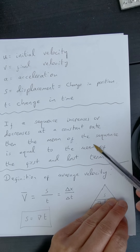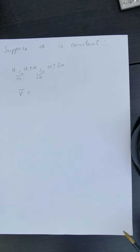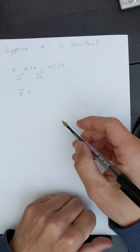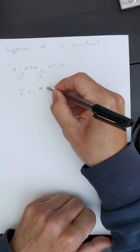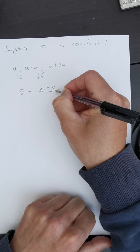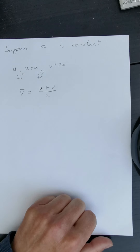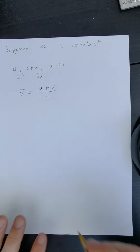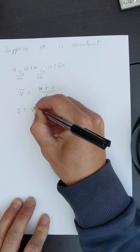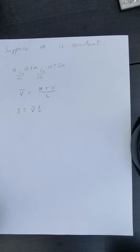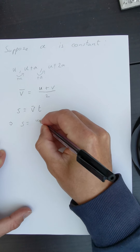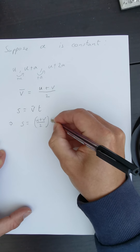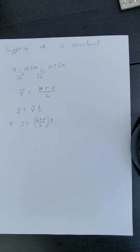From our arithmetic sequence result: if a sequence increases or decreases at a constant rate, the mean equals the mean of the first and last terms. So the average velocity is (u + v) / 2, where u is the initial velocity and v is the final velocity. And since displacement is always equal to average velocity multiplied by time, the displacement equals (u + v) / 2, multiplied by t.